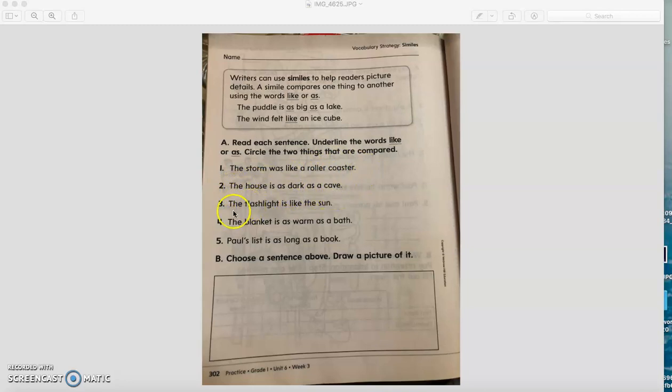Number three, the flashlight is like the sun. Where is the simile word and what are they comparing? The flashlight and the sun.